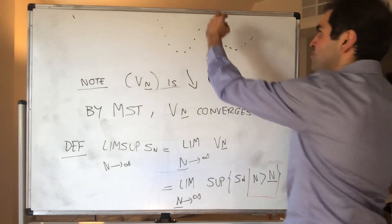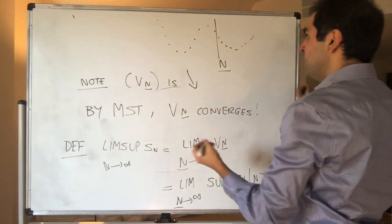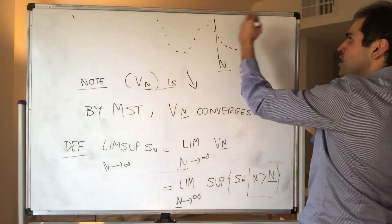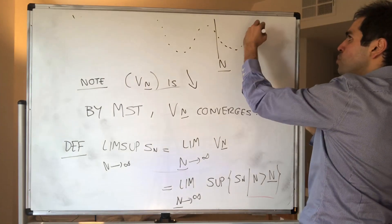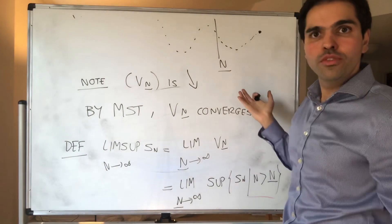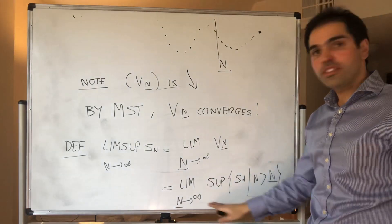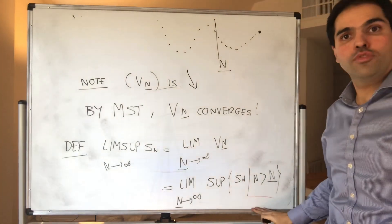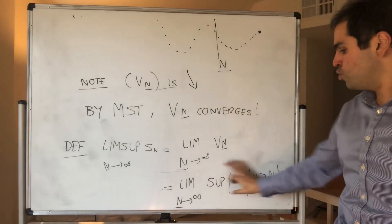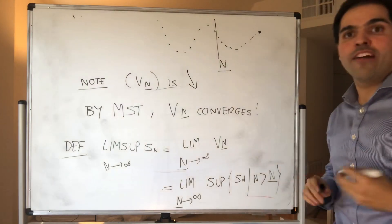Let me emphasize: capital N is very large, and all that you're looking at is just the biggest possible value of your sequence after a long time. That's all the lim sup is saying — it's the sup when n is very large.